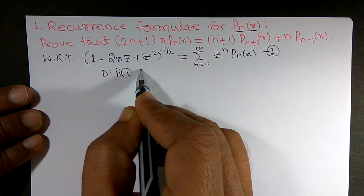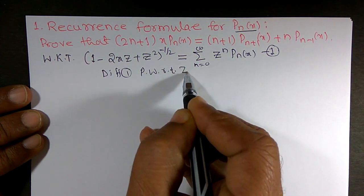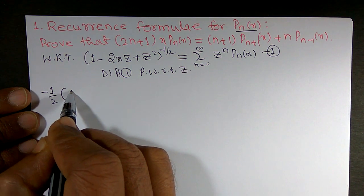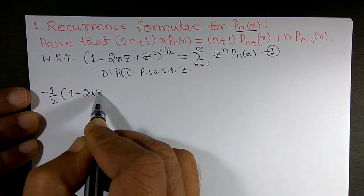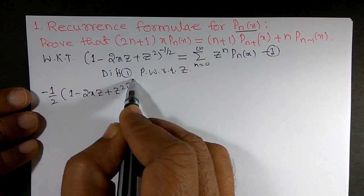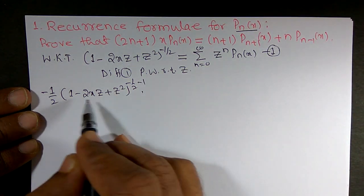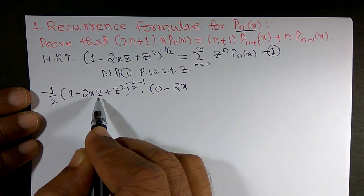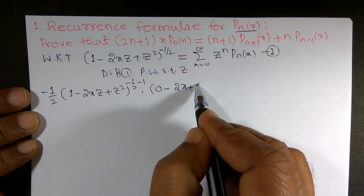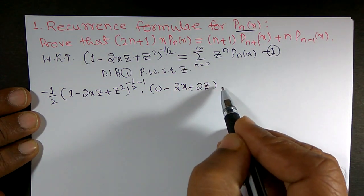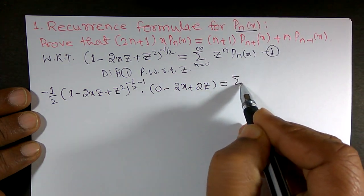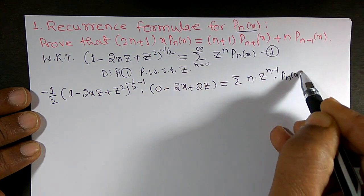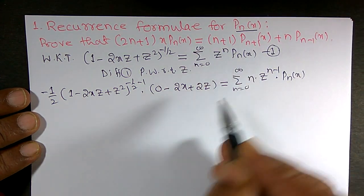So differentiate equation 1 partially with respect to z. So minus 1/2 times (1 - 2xz + z²)^(-3/2) times the derivative of the inside — 1 is 0, minus 2x times 1 plus 2z — equals summation of n · z^(n-1) · Pn(x) for n from 0 to infinity.